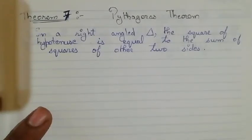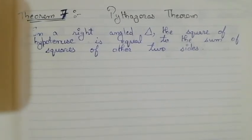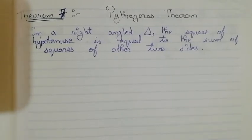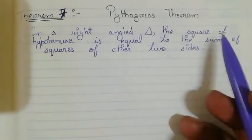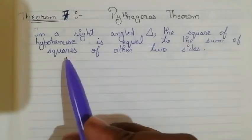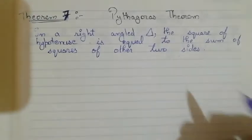Hello students. Before solving exercise 6.5, we need to know about a theorem called the Pythagoras theorem. The statement of this theorem is: in a right-angled triangle, the square of the hypotenuse is equal to the sum of the squares of the other two sides.